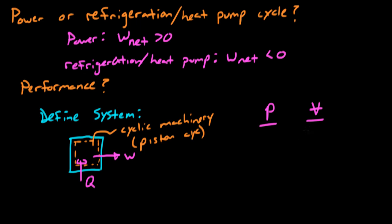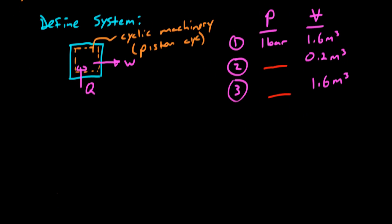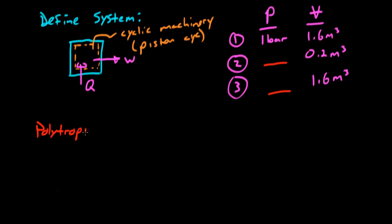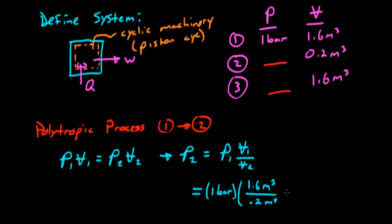A great place to start is to combine all of our information into a table — a pressure and volume table. At state 1, we had 1 bar and 1.6 meters cubed. At state 2, the volume is 0.2 meters cubed. At state 3, the volume is back to 1.6 meters cubed. But we don't know the pressure at state 2 or state 3. We can use the polytropic relation since PV is a constant, so P1V1 equals P2V2. Rearranging, P2 equals P1 times V1 over V2, which gives 1 bar times 1.6 divided by 0.2, giving us 8 bar for the pressure at state 2. Since the process from 2 to 3 is constant pressure, state 3 is also at 8 bar.